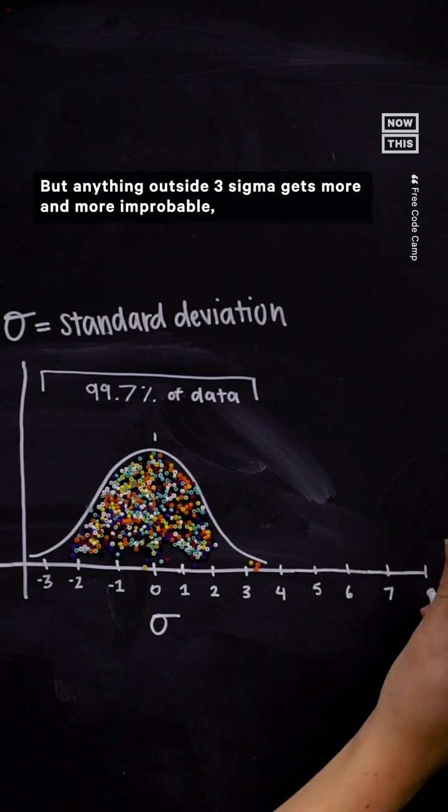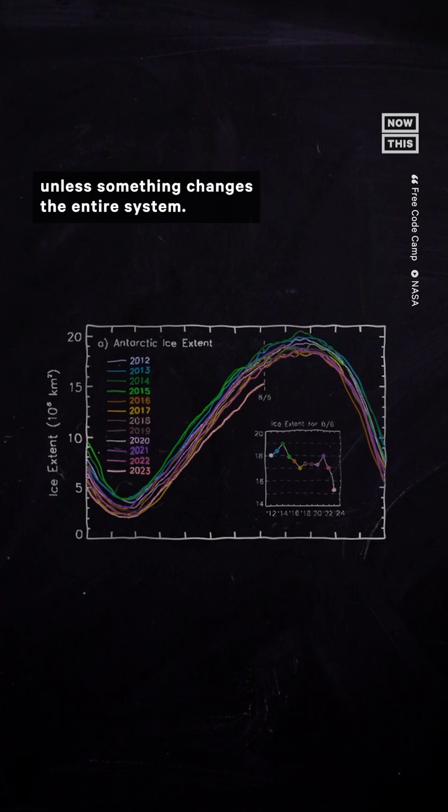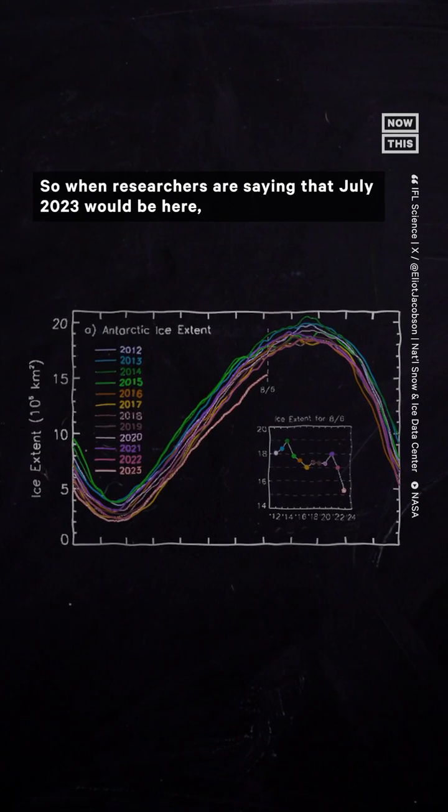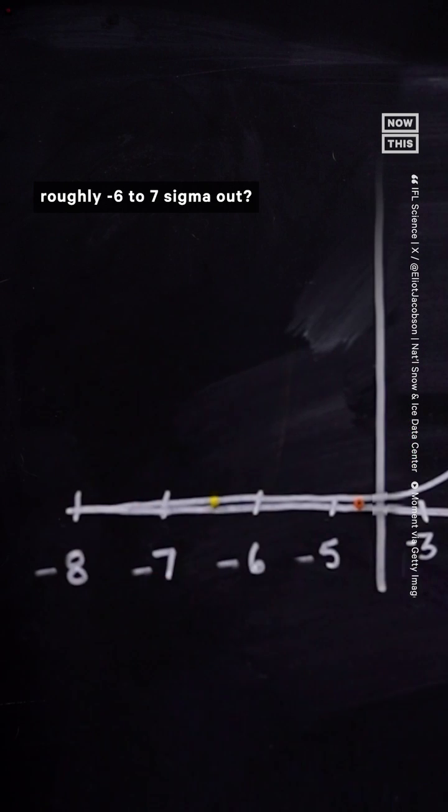But anything outside three sigma gets more and more improbable, to the point where it's basically impossible unless something changes the entire system. So, when researchers are saying that July 2023 would be here, roughly negative six to seven sigma out,